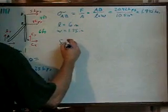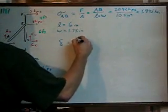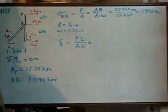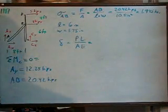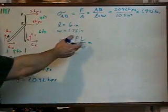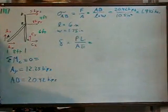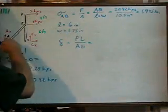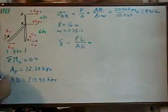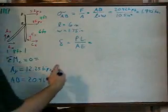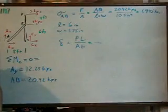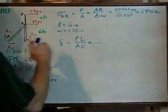The deflection is our favorite equation, PL over AE. And the Young's modulus is given as 10 times 10 to the 6 psi. We already have the length here from point A to B. We can calculate this is a 6, 8, 10 triangle, so that's 10 feet. And we end up with 0.023 inches.